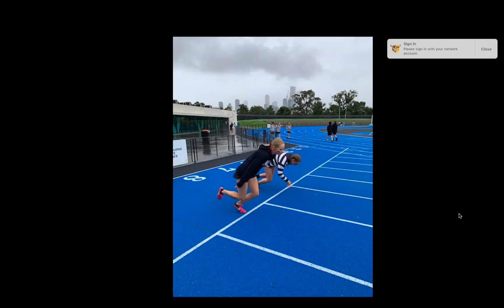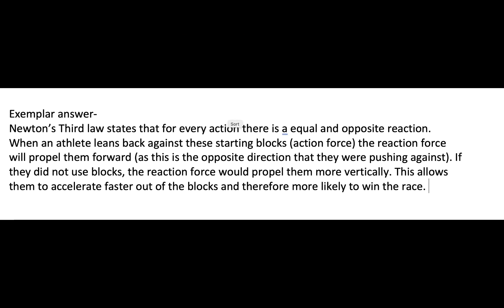When these two runners are not using blocks, you can see their bodies are a lot more upright because the force they've put into the track applies an equal and opposite force in the direction that's been applied. Without blocks, that force is more vertical than it was with the blocks, which means a lot of the force goes up into the air instead of towards the finish line. Here's an exemplar for you to look at in relation to that question — hopefully this helps your understanding of Newton's third law.